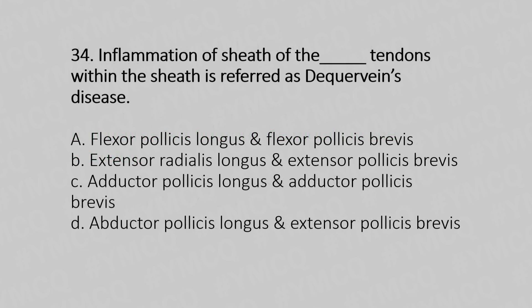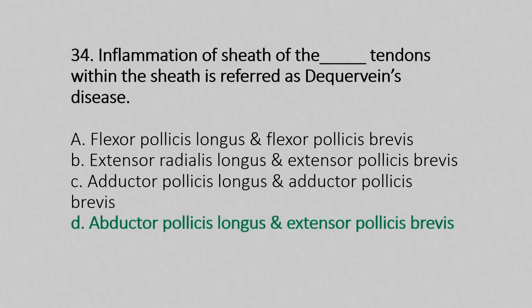Now let's move to question number 34. Inflammation of the sheath of the tendon within the sheath, referred to as de Quervain's disease, involves which tendons? Option A: flexor pollicis longus and flexor pollicis brevis. Option B: extensor radialis longus and extensor pollicis brevis. Option C: adductor pollicis longus and adductor pollicis brevis. Option D: abductor pollicis longus and extensor pollicis brevis. And the answer is Option D — abductor pollicis longus and extensor pollicis brevis.